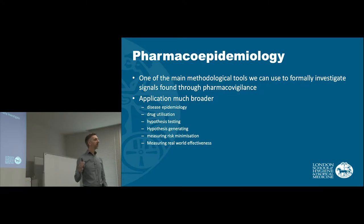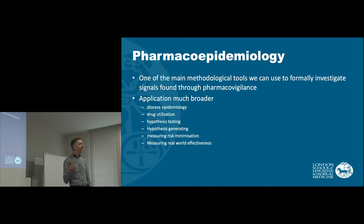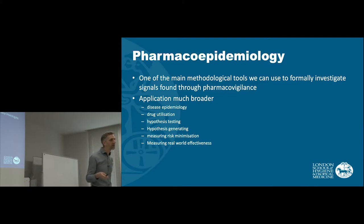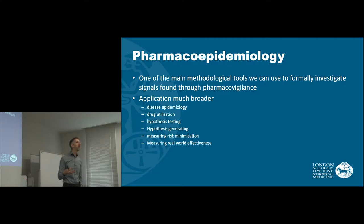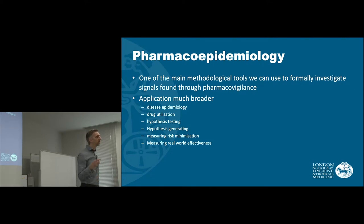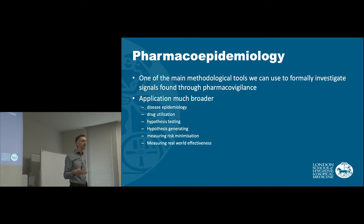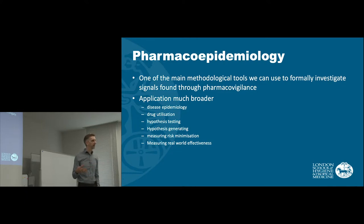Pharmacoepidemiology is one of the key tools we would use to investigate the signals that we might find through spontaneous reporting. But the application of the discipline is much broader than this, as you will see throughout this course. It can help us to understand the disease epidemiology or the indication for a treatment. It can help us to study drug utilization — so who's using the drug. We can test hypotheses, but we can also generate hypotheses. We can measure how effective we're being when we try to minimize risks, and we can also potentially use these methods to study real-world effectiveness of treatments.